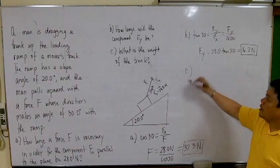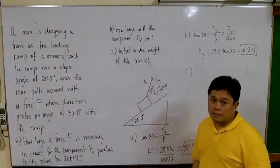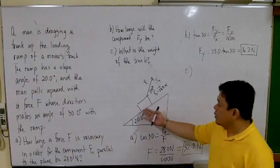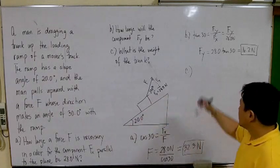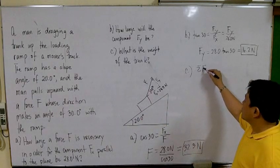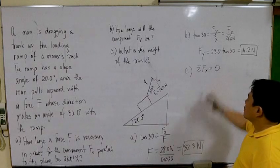In letter C, what is the weight of this trunk? We know that to keep this trunk at rest, the sum of forces along the x should be equal to zero.